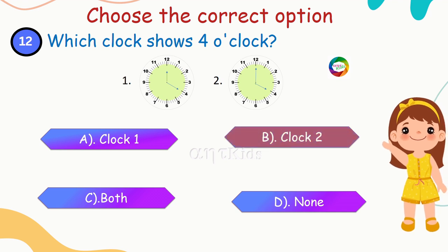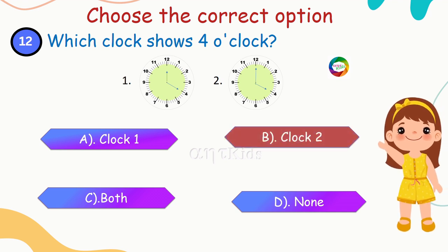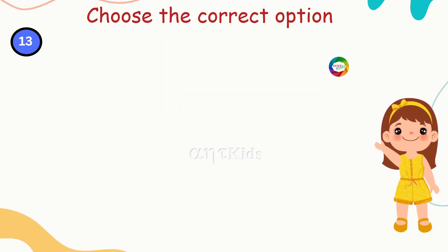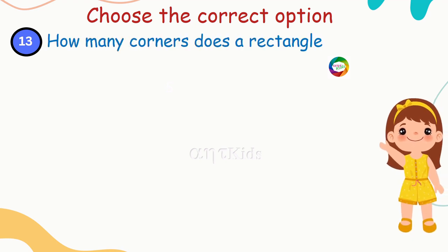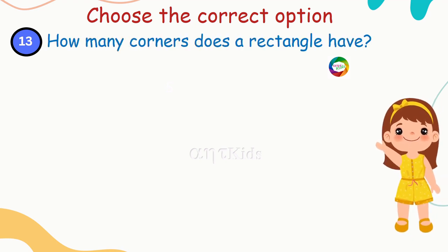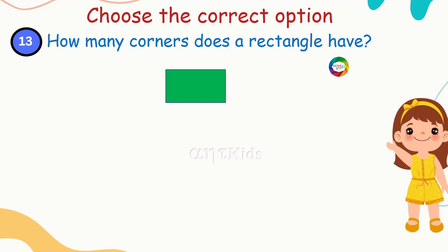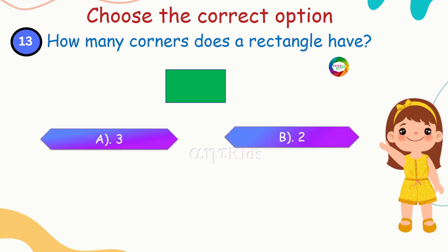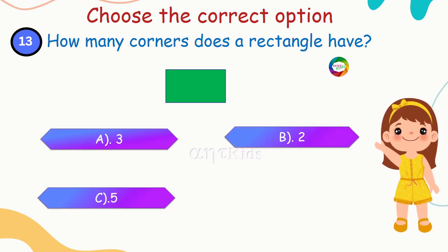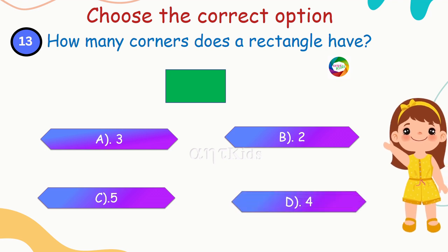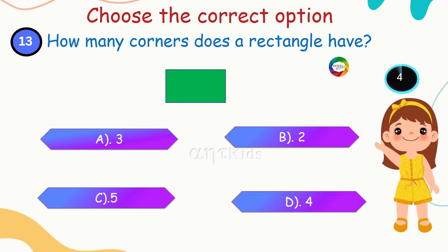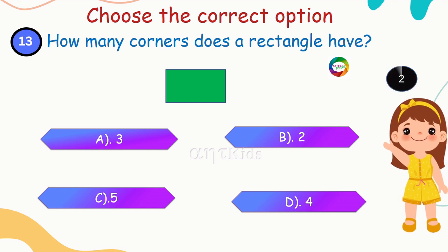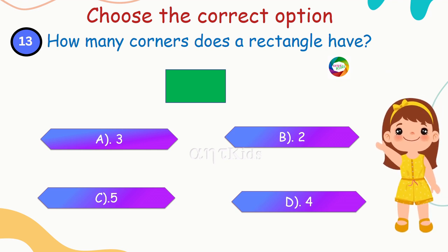Yes, clock two shows four o'clock. Next question: how many corners does a rectangle have? Options: four, three, two, five. Yes, you're right — four corners!